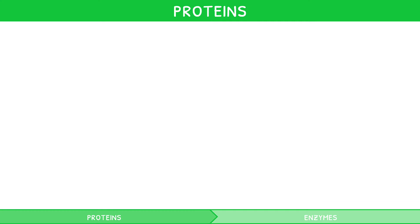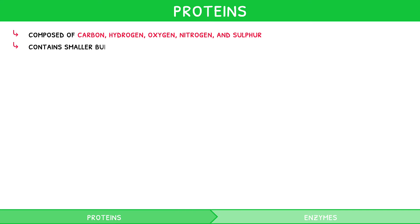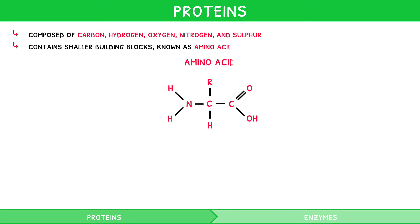Proteins are a group of molecules composed of carbon, hydrogen, oxygen, nitrogen and sulfur. Each protein contains smaller building blocks known as amino acids, which come in 20 different forms. Most living organisms use only these 20 amino acids to create the vast array of proteins that exist in our world. Only a very select group of organisms use 22 amino acids.